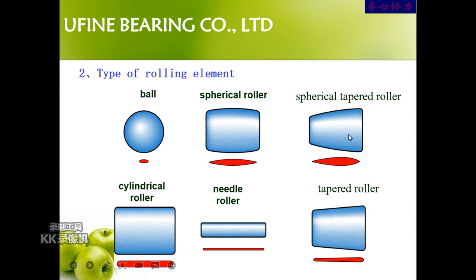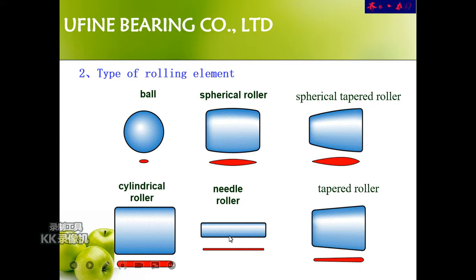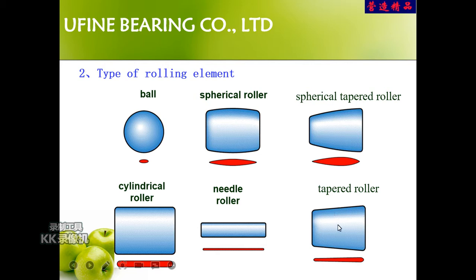The next is the tapered spherical roller. As we can see from the photo, it's not only spherical but also tapered, and it is widely used in different kinds of bearings. Next is a cylindrical roller — a very common rolling element mainly used in cylindrical roller bearings. Then there is the needle roller, which is very thin, just like a needle. It can be hard to distinguish from a cylindrical roller, but the cylindrical roller is thick while the needle roller is thin. The last one is the tapered roller, mainly used in tapered roller bearings.